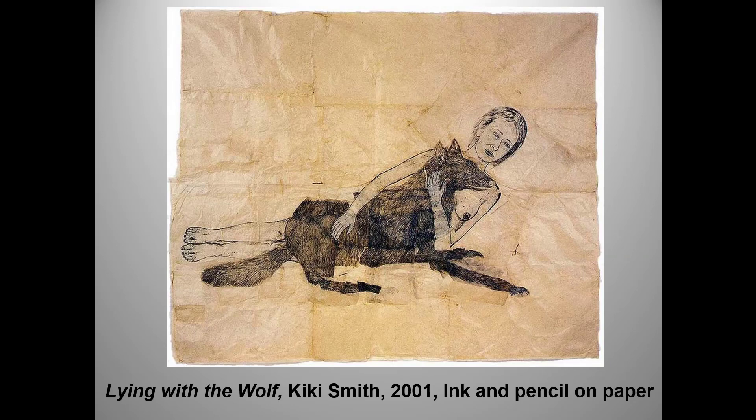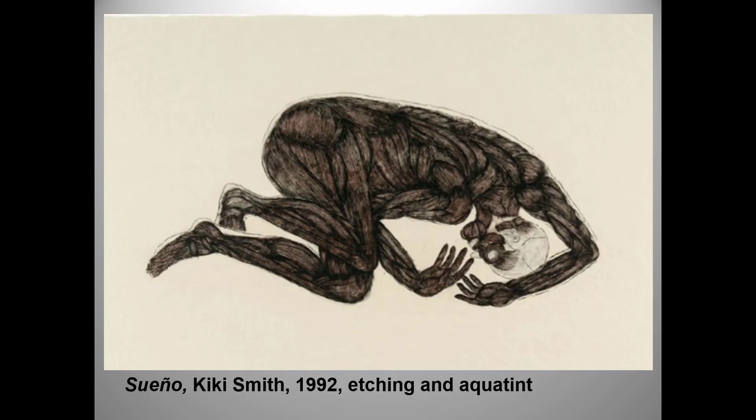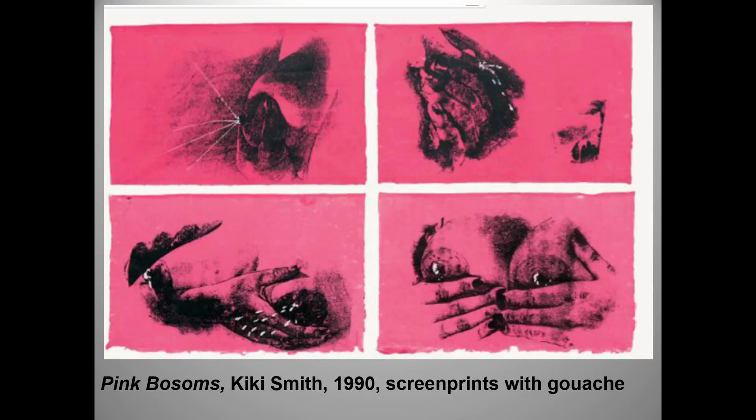We now turn to female artists who are more interested in exploring the female body, and more specifically, the female body in relationship to nature. Kiki Smith trained as an EMT as well as an artist, and her early work shows her fascination with human anatomy. Many of her works also focus on body fluids — breast milk as shown here, and also urine and menstrual blood. She often seeks to expose and break down social taboos, especially those that hide the working of the female body.